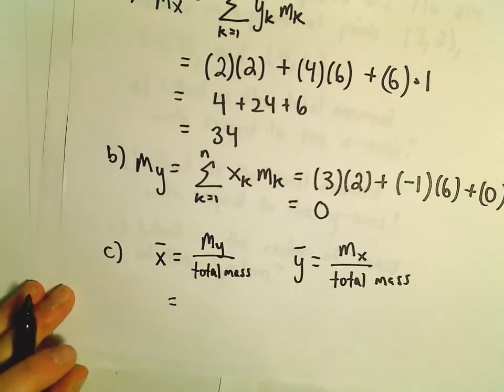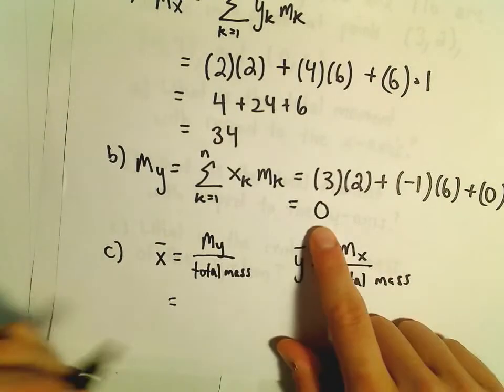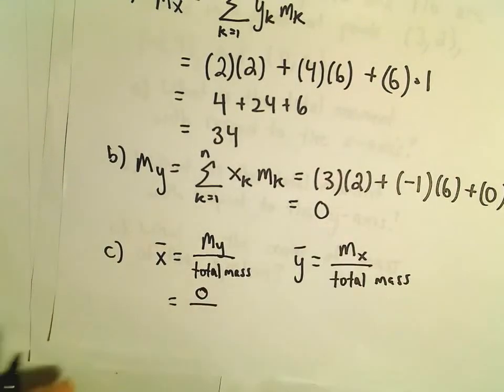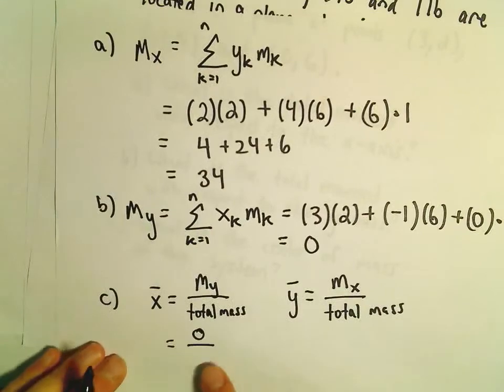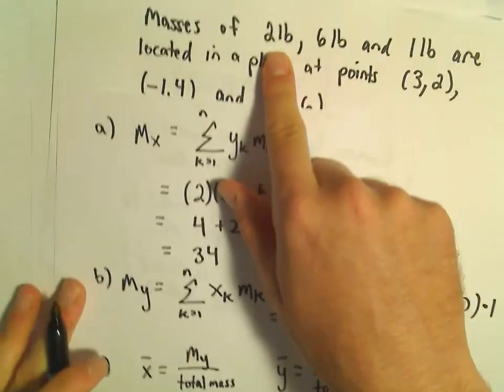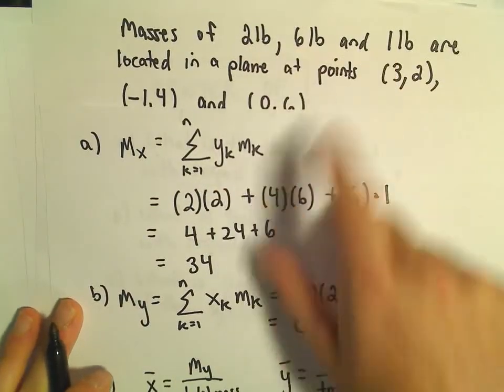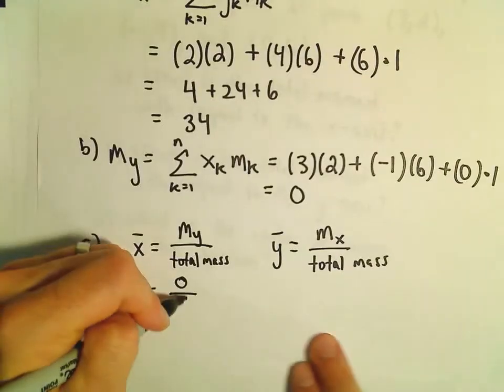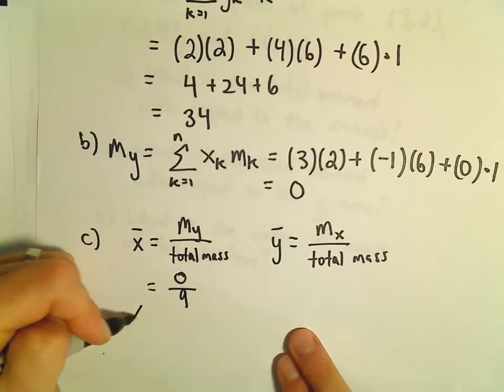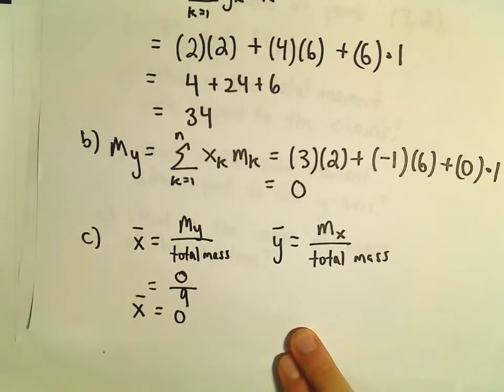We've already computed most of these things. The moment about the y-axis had a value of 0. Let's calculate the total mass: 2 plus 6 is 8, plus 1 is 9. So x-bar would have a value of 0.